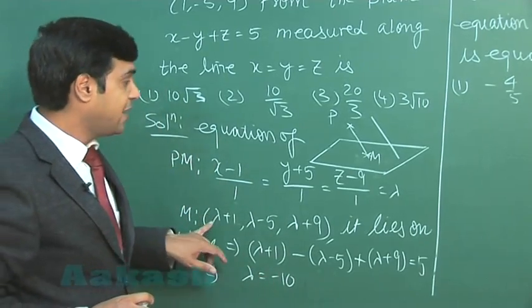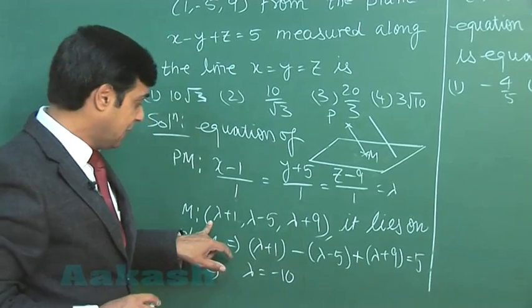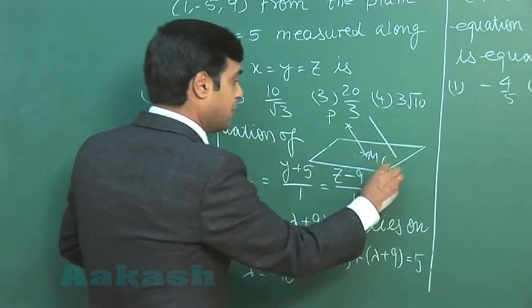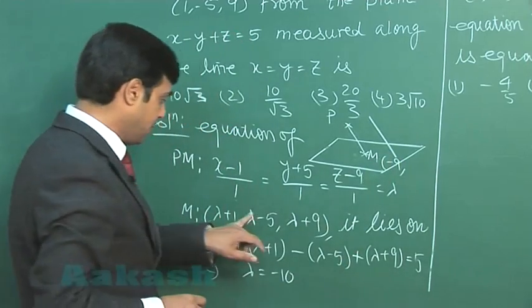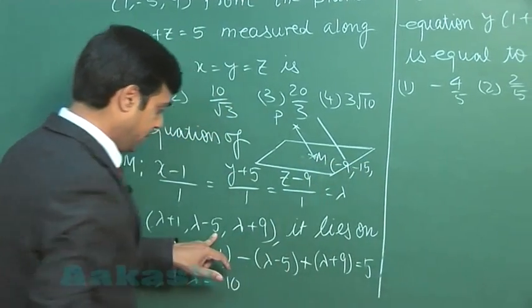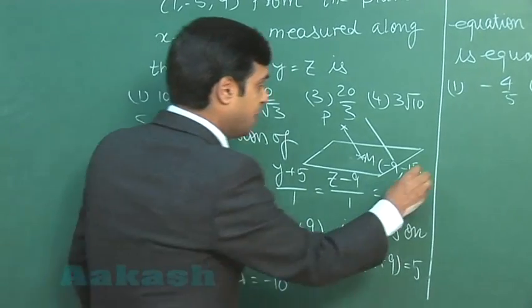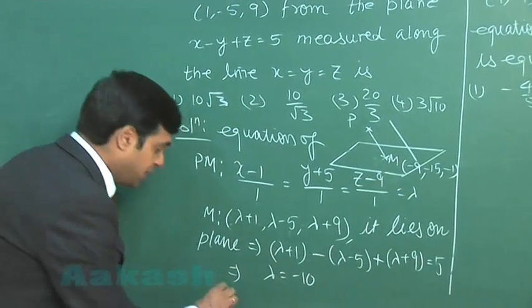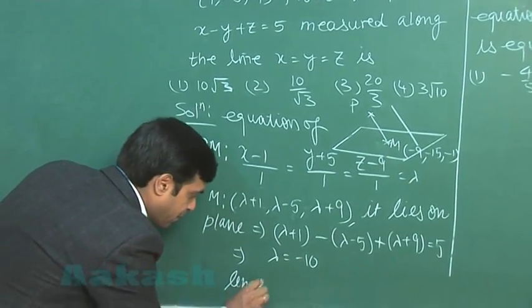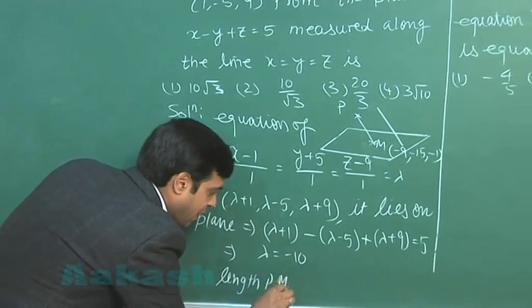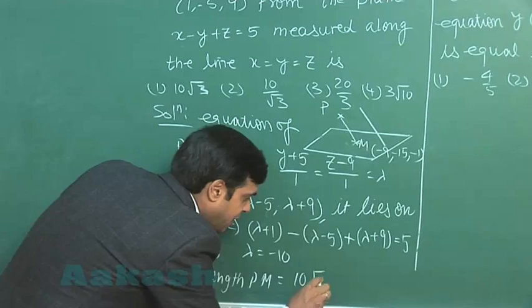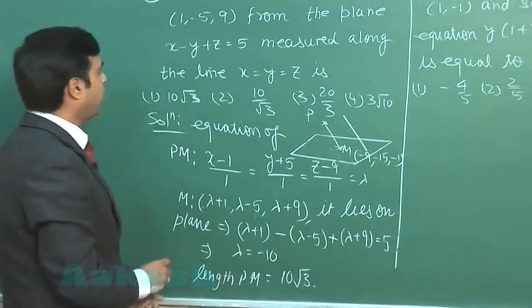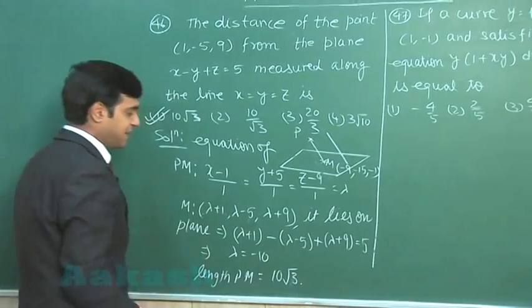Put the value of λ here in M to get the point. This point comes as minus 9, minus 10 minus 5 is minus 15, minus 10 plus 9 is minus 1. Apply the distance formula to get the length PM as simply 10√3. We can see from the given options, option 1 is correct.